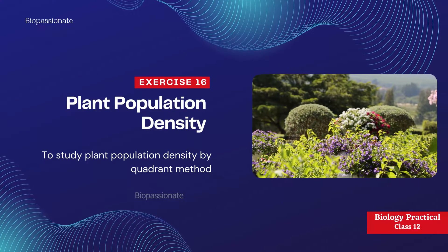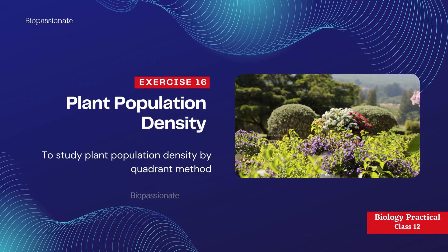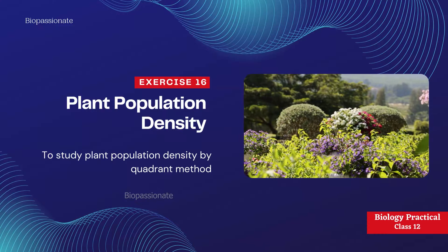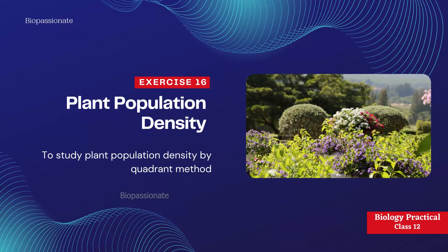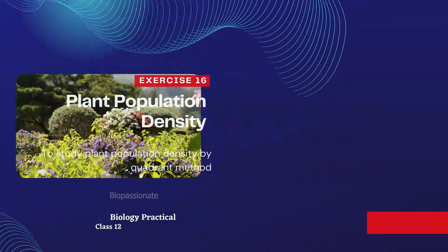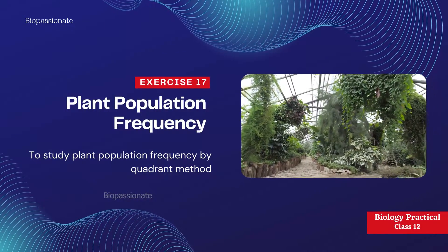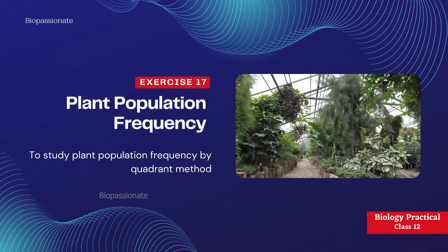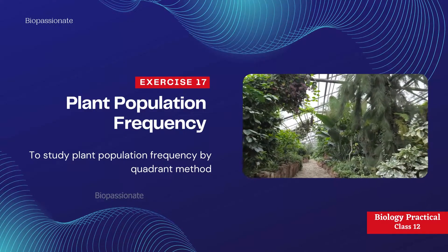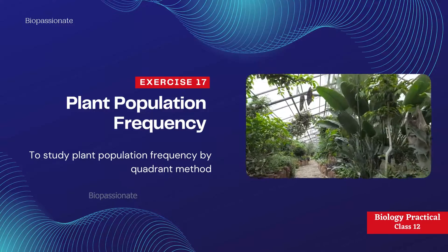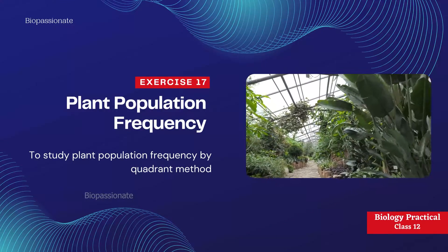Exercise number sixteen: plant population density — to study plant population density by the quadrant method. This experiment is not important for the practical examination. Exercise number seventeen: plant population frequency — to study plant population frequency by the quadrant method. This experiment is also not important for the examination.